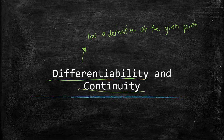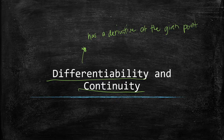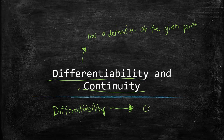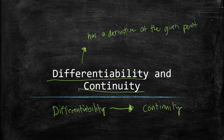We already know what continuity means: the function does not have any gaps or any jump at that given point. Differentiability implies continuity. If you can find the derivative of a function at a given point — you can get the slope of the tangent line — then that function is already continuous at that given point.